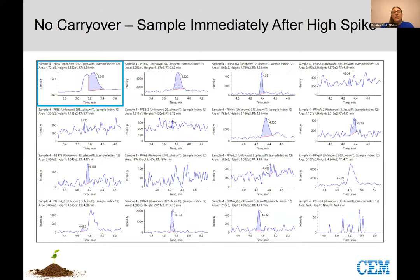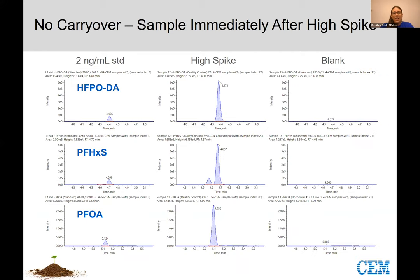For the high spike study, we were just as interested in our blanks as in actual recovery values. Looking at the carryover — or lack of carryover — Craig put together a slide comparing the standard at 2 nanograms per milliliter with the high spike and the blank, giving a clear visual that carryover is negligible. We did a very aggressive wash and are not seeing any carryover.